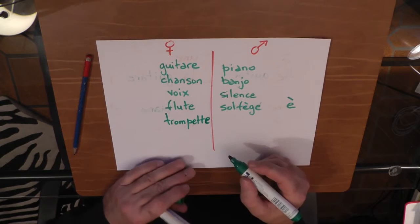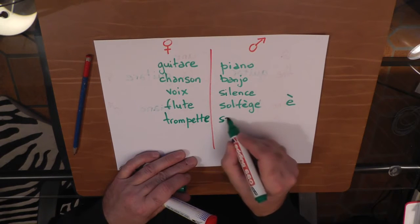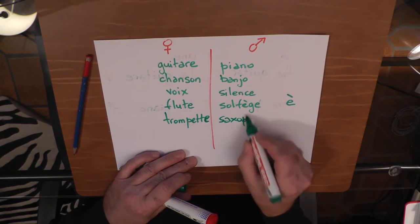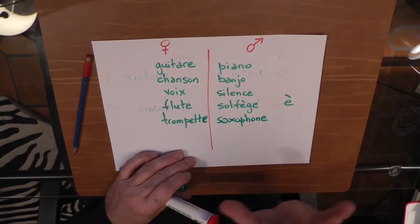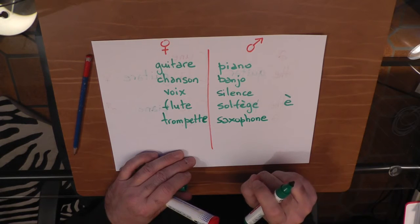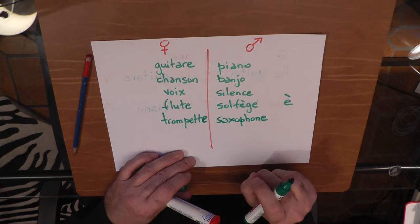Last one, for example, a saxophone. A saxophone is masculine. Le saxophone. On. It's more open. Saxophone. Le saxophone. Un saxophone.